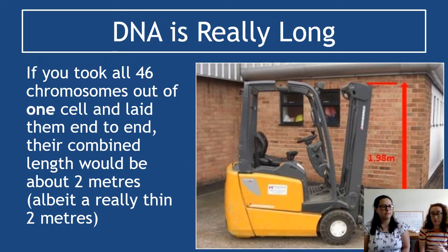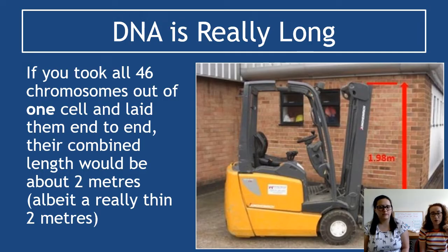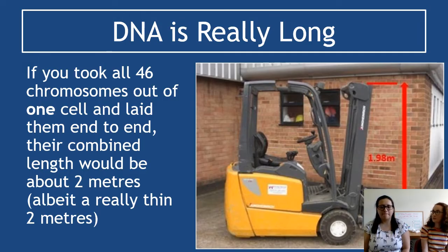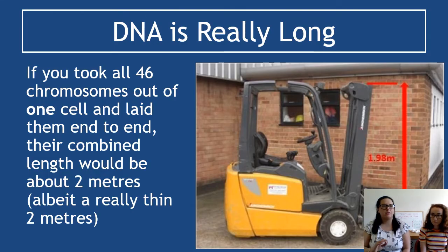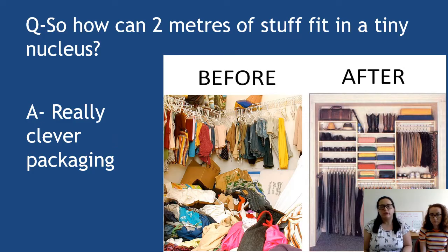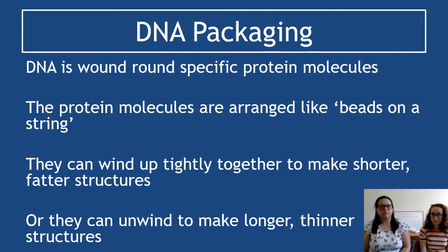DNA is really long - every human has 46 chromosomes in one nucleus, which are stacks of genes made up of sections of DNA. The diagram shows 1.98 meters of DNA per cell. Think about how small an animal cell is, with a nucleus even smaller, yet it contains around two meters of DNA. So how can two meters of material fit in a tiny nucleus? The answer is really clever packaging.